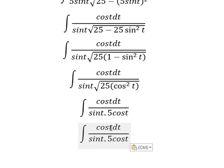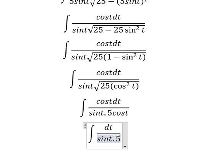Cosine t and cosine t we simplify, and then we put number 5 outside.